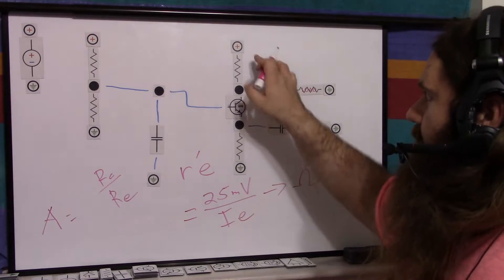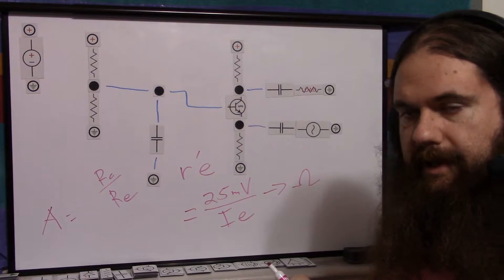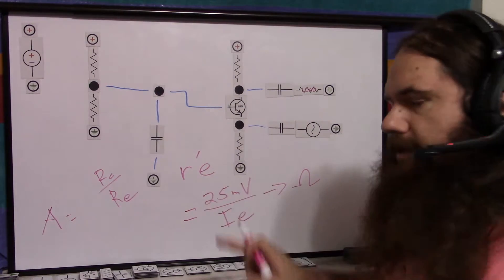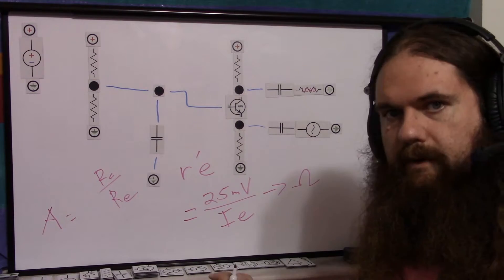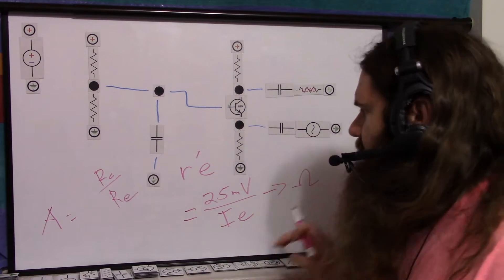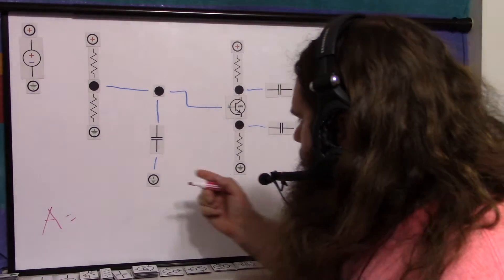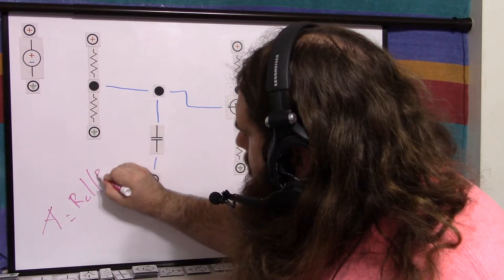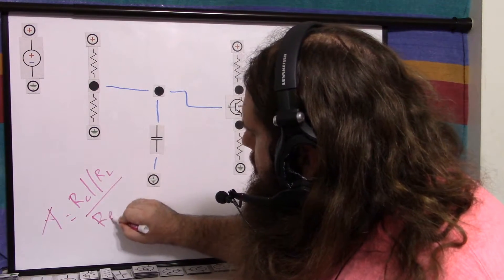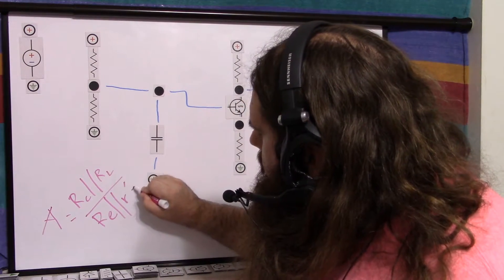And just like the collector and the load being in parallel, the emitter resistor and this resistor are in parallel. When doing something called small signal analysis, which is a whole thing on its own, so the real relation is RC in parallel with RL over RE in parallel with r apostrophe e.